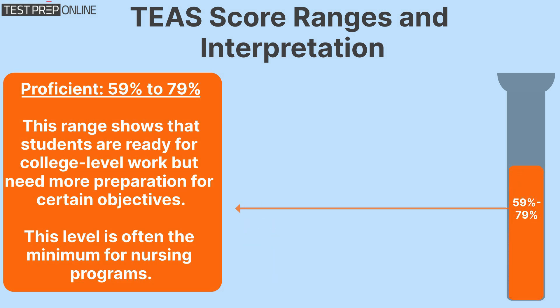PROFICIENT: 59% to 79%. This range shows that students are ready for college level work but need more preparation for certain objectives. This level is often the minimum for Nursing programs.